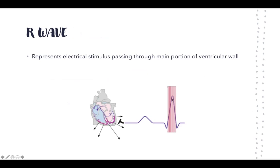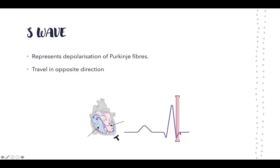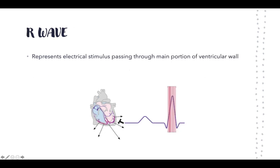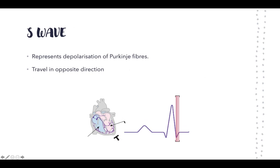Now let's talk about the S wave, which represents the depolarization of the Purkinje fibers. The R wave reflects depolarization of the ventricular wall, with vectors pointing toward the detector, registering a positive signal. The Purkinje fiber depolarization produces a more perpendicular wave traveling in opposite directions, giving a small negative deflection — that's the S wave.